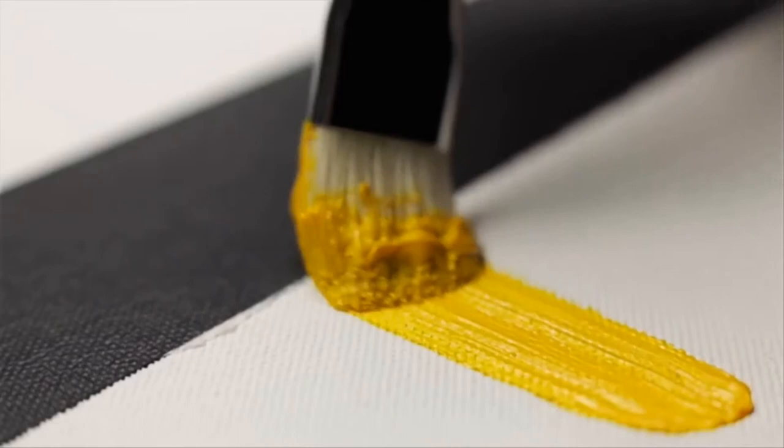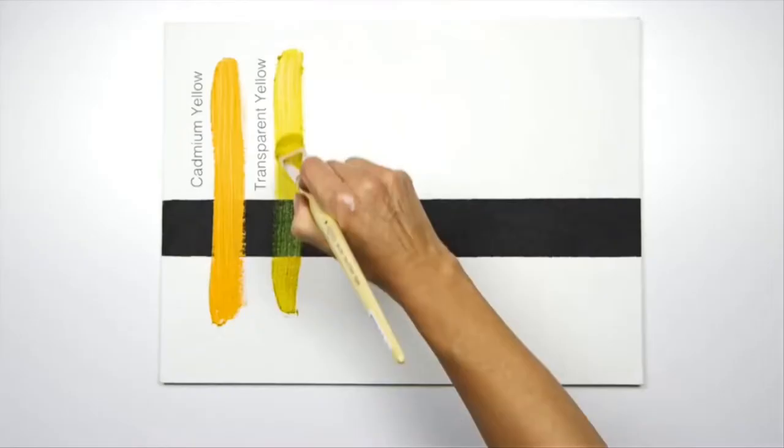And pulling down on the transparent yellow, you can see that it allows the black to show through, which would make it really good for glazing.